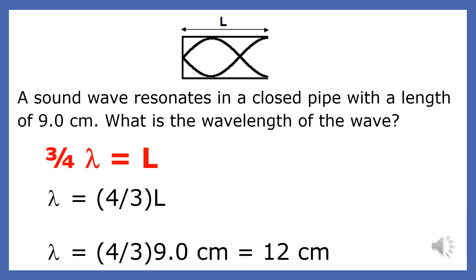A sound wave resonates in a closed pipe with a length of 9 centimeters. What is the wavelength of this wave? The standing wave's length is L, and we have three-quarters of a wavelength. So if L equals three-quarters of a wavelength, then the wavelength is four-thirds L. And if L is 9 centimeters, then four-thirds of 9 centimeters is 12 centimeters.